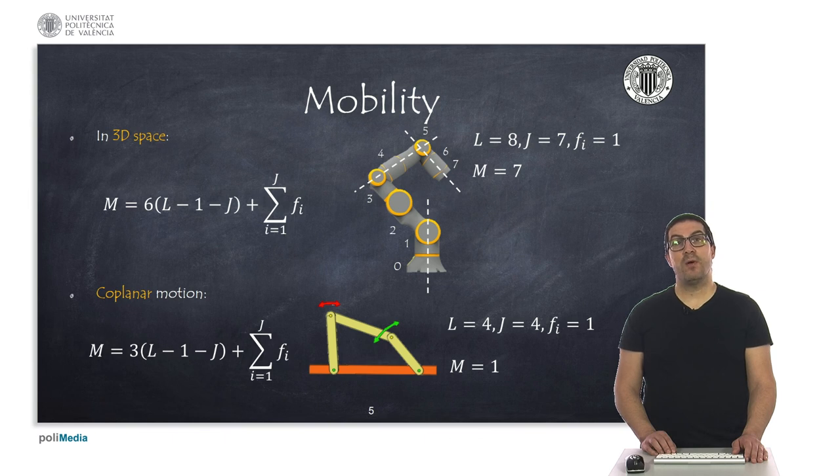On the other hand, in the four-bar mechanism below, the number of links is four, as well as the number of joints. Again, each of these joints has a single degree of freedom mobility, also Fi equals one, and therefore in this case the mobility for this robot is one.